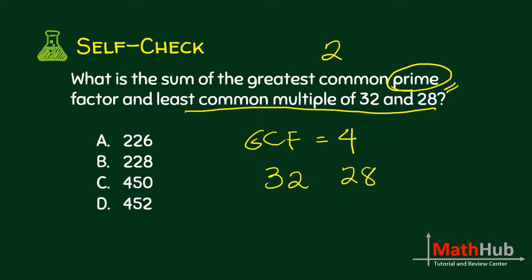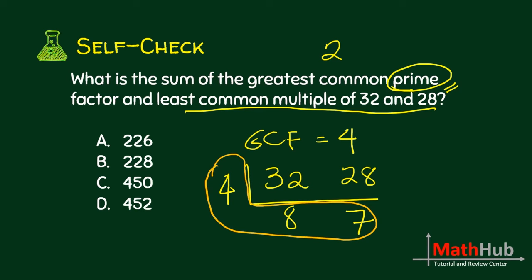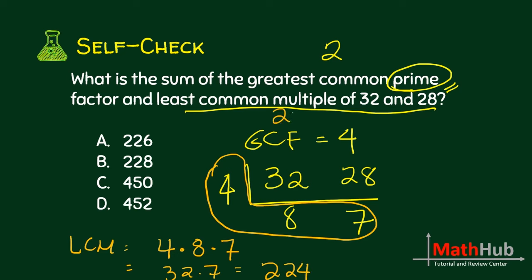How do we get the LCM? We use continuous division. A number that divides both 32 and 28 is 4. Divide: 32 divided by 4 is 8, and 28 divided by 4 is 7. Is there still a number that divides both 8 and 7? None already. So the LCM is the product of the outer numbers: 4 times 8 times 7. That is 32 times 7, which is 224.